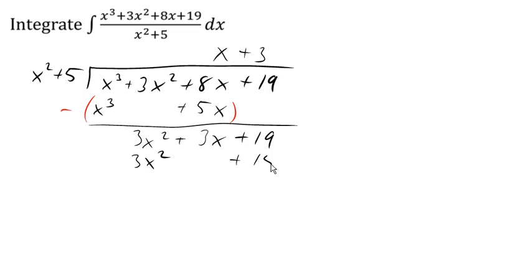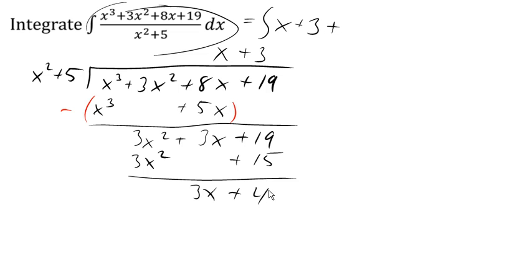Again, we subtract. So we get 0 in the first column. 3x here. 19 minus 15 is 4. So this tells me that this fraction here is equal to x plus 3. So this is equal to the integral of x plus 3 plus, and then this is the remainder. So it's 3x plus 4 over the quantity x squared plus 5.